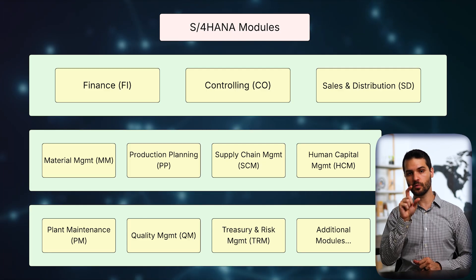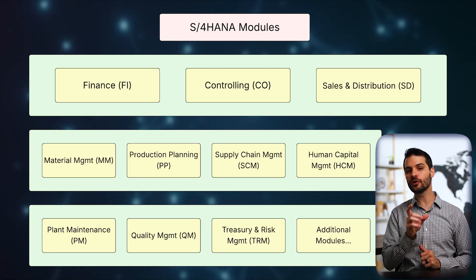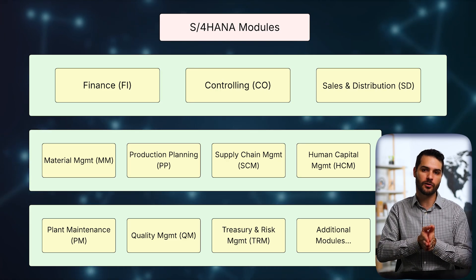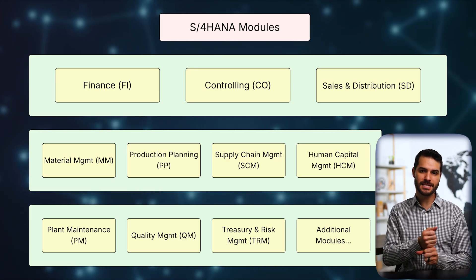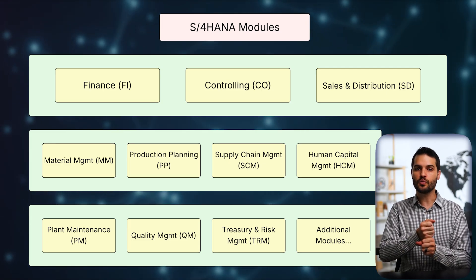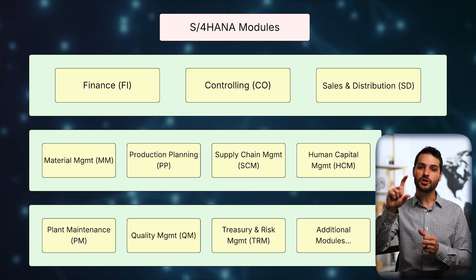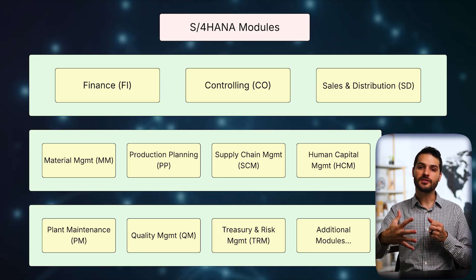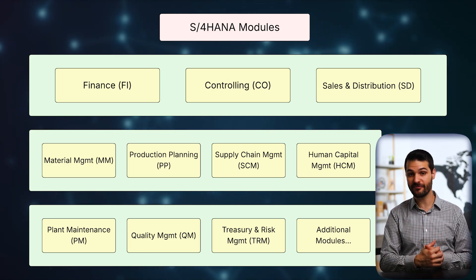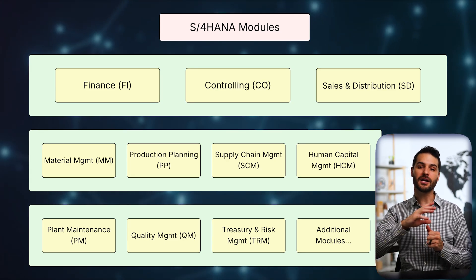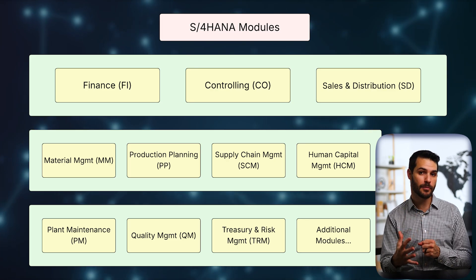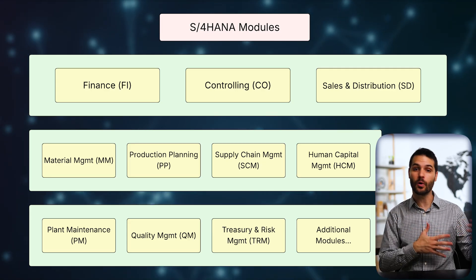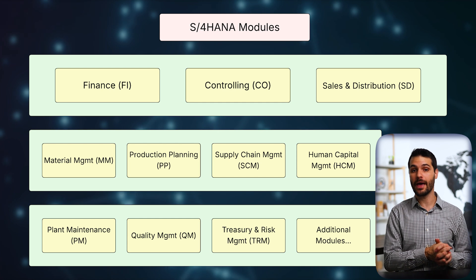When you do get an individual module — let's say HCM — you should be aware that many modules require elements of other modules to function at all. So if you got just HCM, you wouldn't get a full FICO setup, but you would get a bare-bones skeletal structure of FI — just what's necessary to make HCM function. You won't be paying for the full module, but you'll get the absolute minimum level of functionality from that module to support whatever you've purchased. The same is true for MM — you'd get whatever SD or FICO components are needed to allow MM to work in the first place.